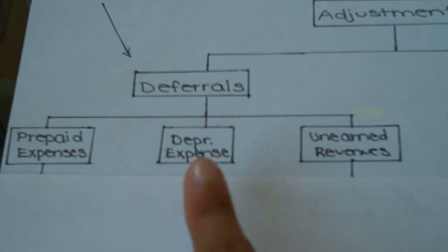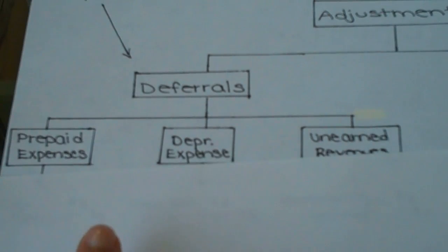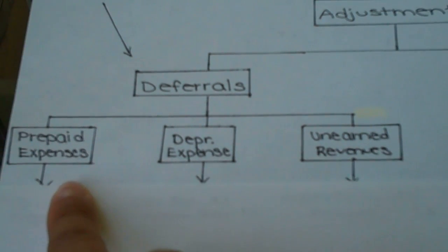Now if a company has these three items at the end of the accounting period, they have to look and see, okay, have I now used any of the items I've prepaid for? Maybe I paid for six months of rent and I've already used one. Therefore we're going to have to do an adjustment to transfer the amount of the asset that has been used. So that's an example of a prepaid expense adjustment.